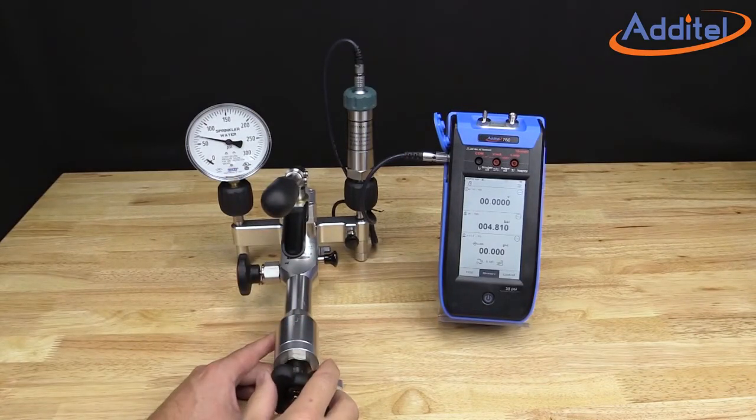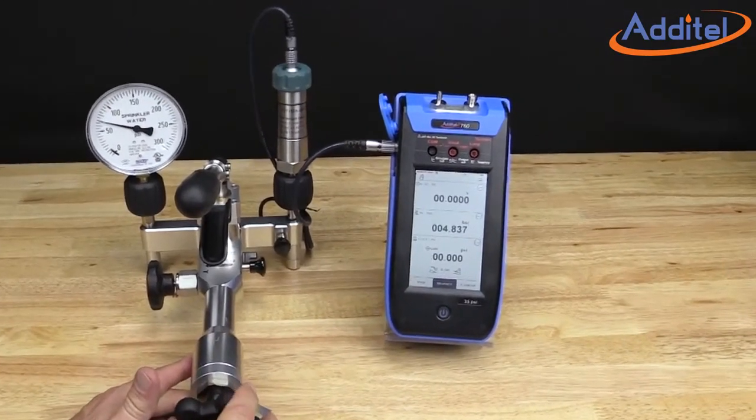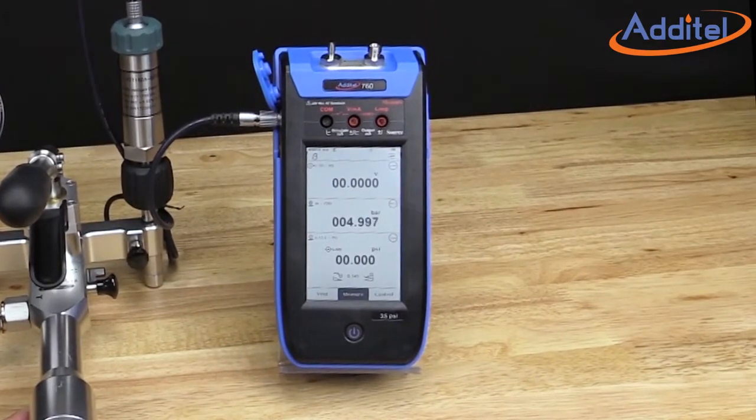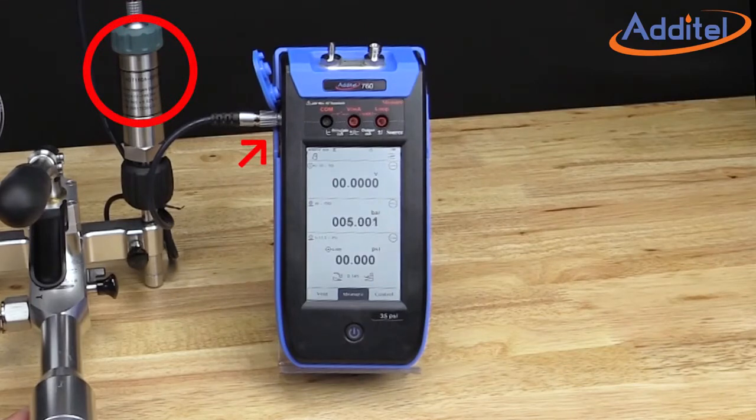Users can also utilize external pressure modules to perform calibration work at much higher pressure ranges if needed. Simply attach an Additel external pressure module and cover even more pressure calibration requirements.